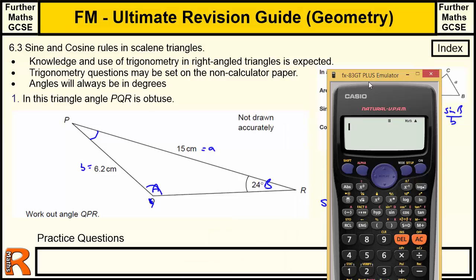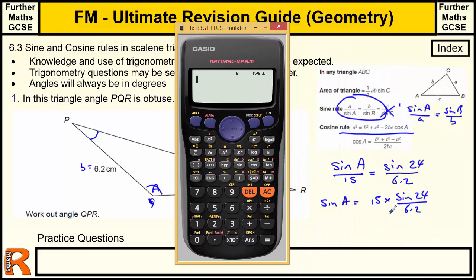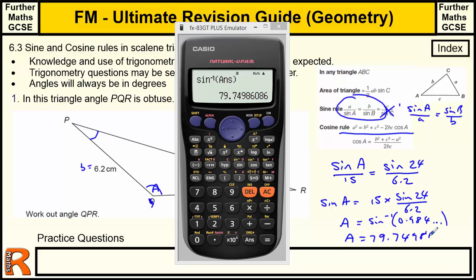Let's bring the calculator up and let's put those values in and see what we get. So I want to do 15 times sine 24 all over 6.2. And that gives us that value there. And then to find A, I want to do the sine to the minus one of that 0.984. Leave it in your calculator. Just do shift, sine, answer, and you get the answer, which is 79.74986 and so on. If you're going to round stuff, you can round angles to the nearest whole degree. But in standard rounding in GCSE maths or A level maths is three significant figures. So that's what we need to do for that.